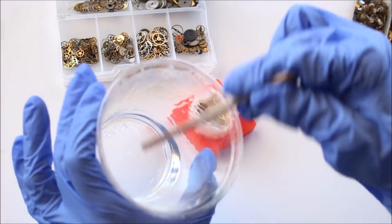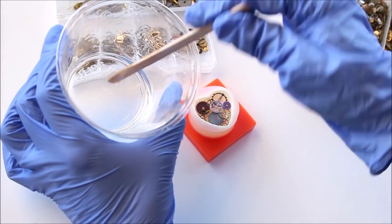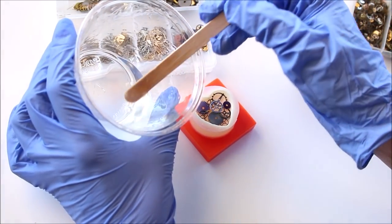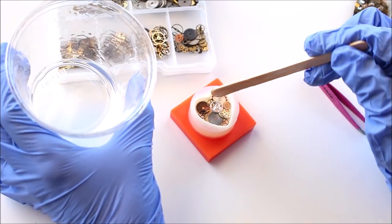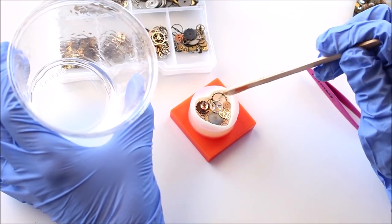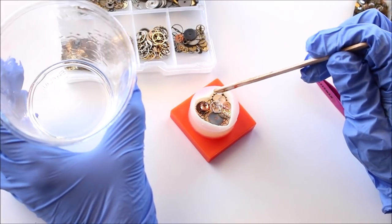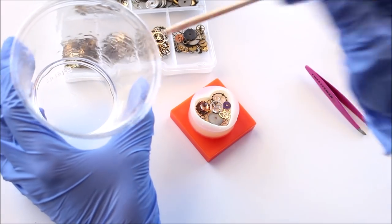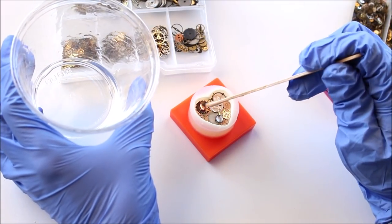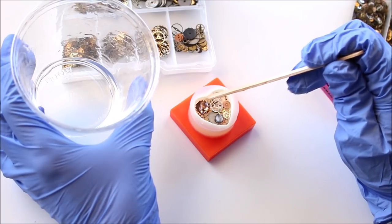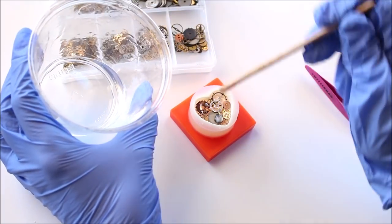Now I'm ready to put my resin in. So I'm going to take my resin and this is, once again, this is the Super Sap CCR. And I'm going to carefully drop it in. And the idea isn't to fill up the entire bezel. You want there to be enough room for the black background layer that's going to come last.